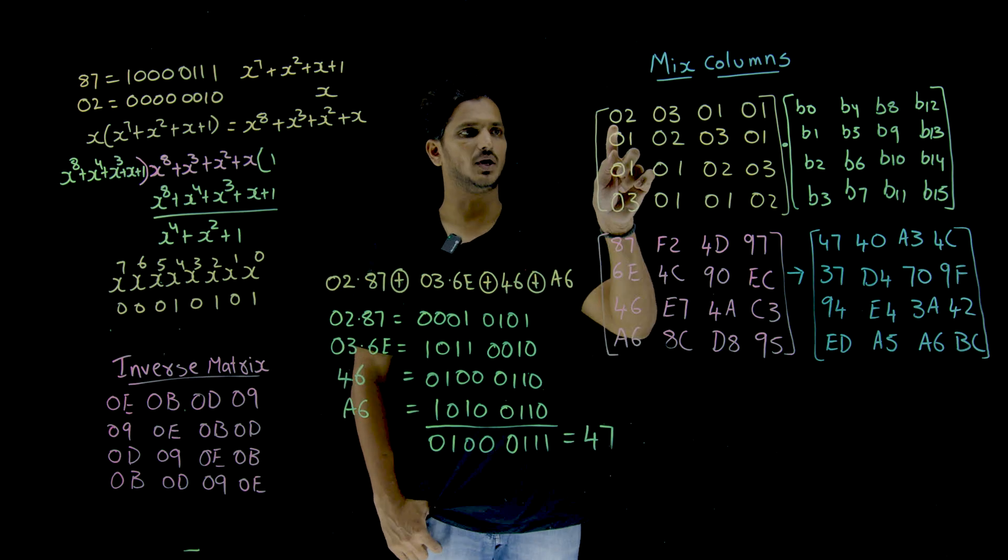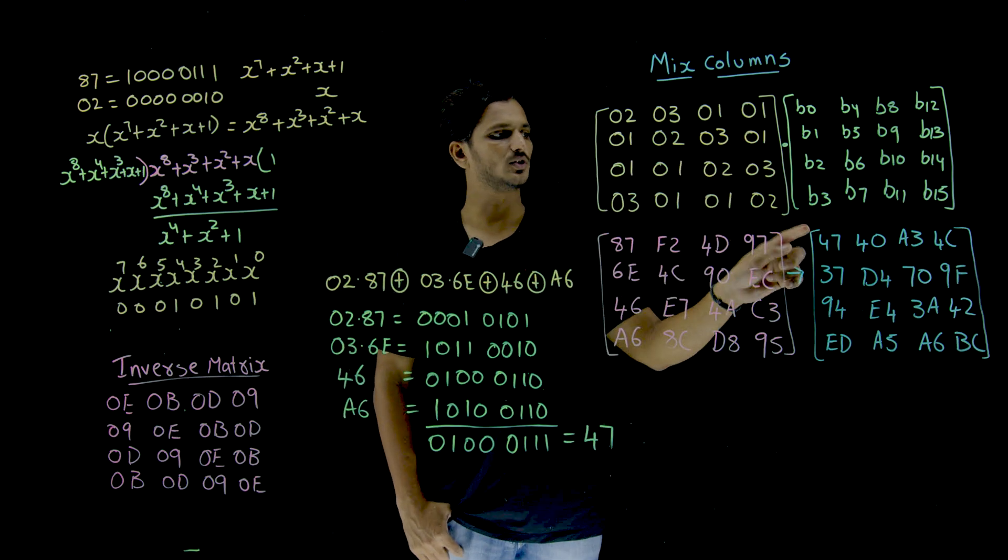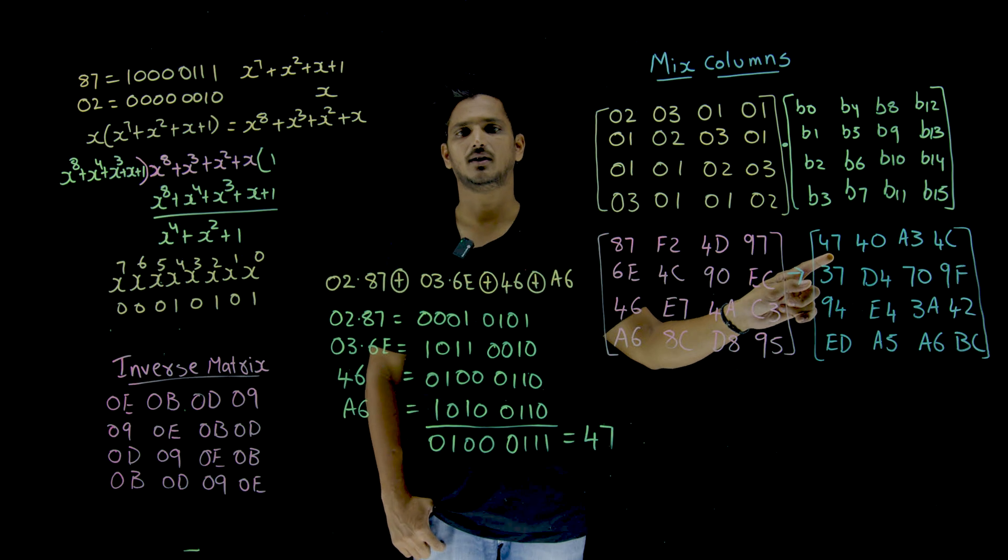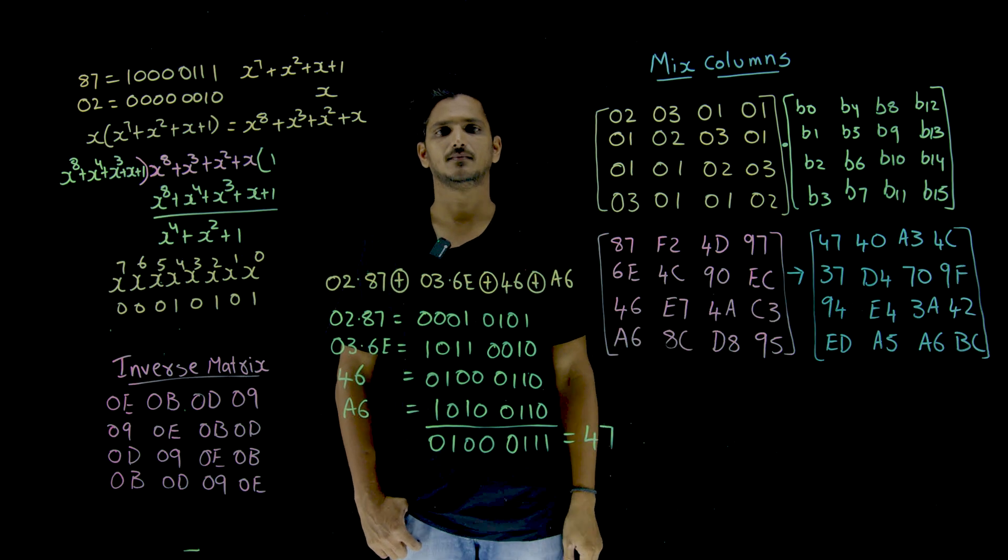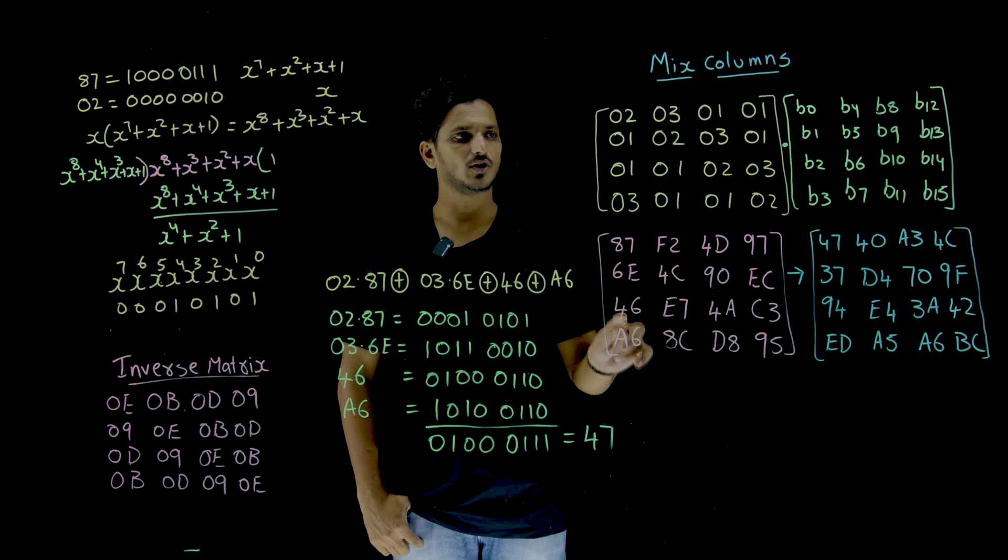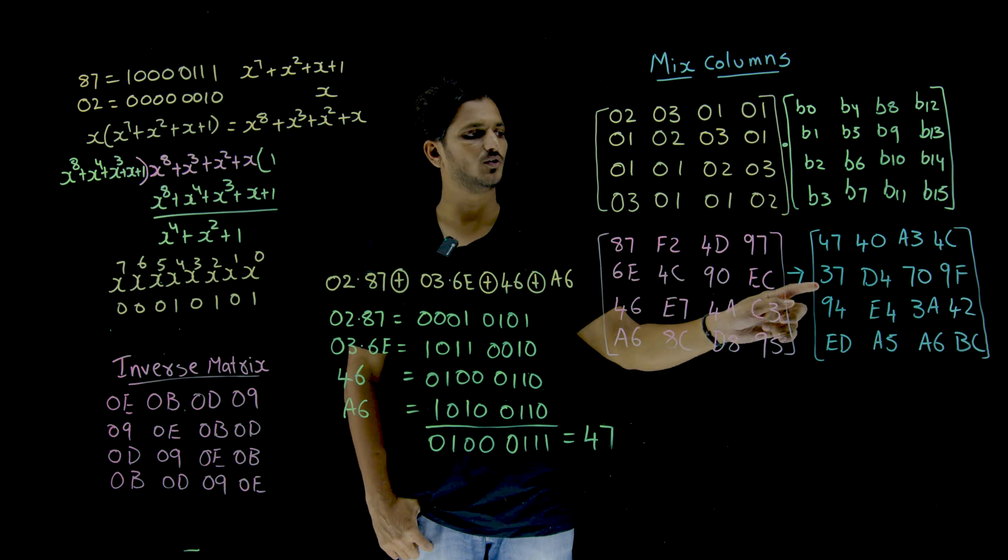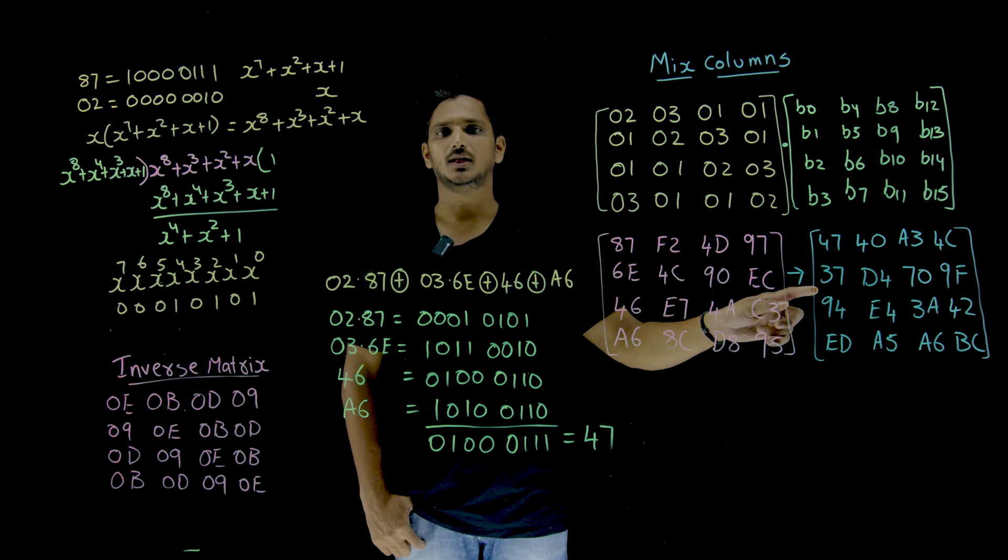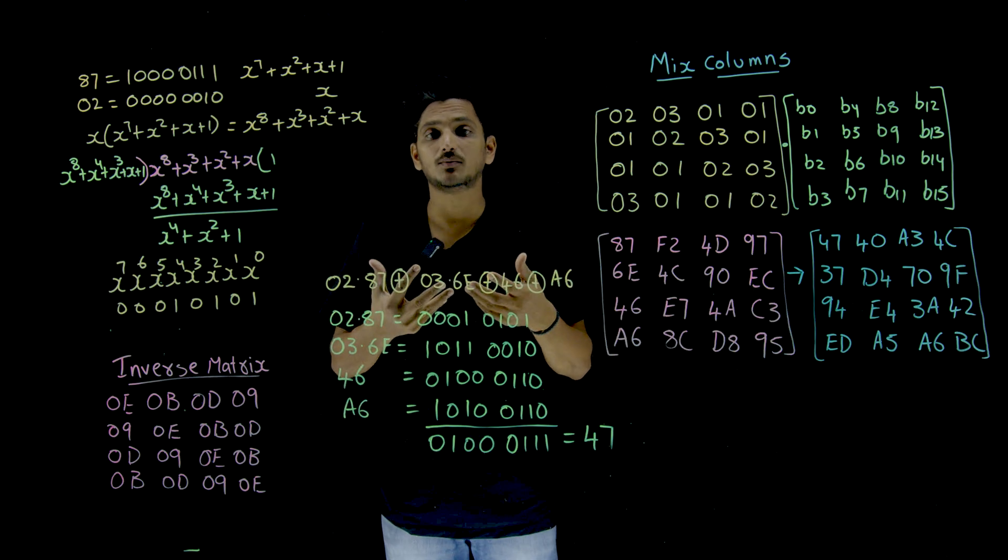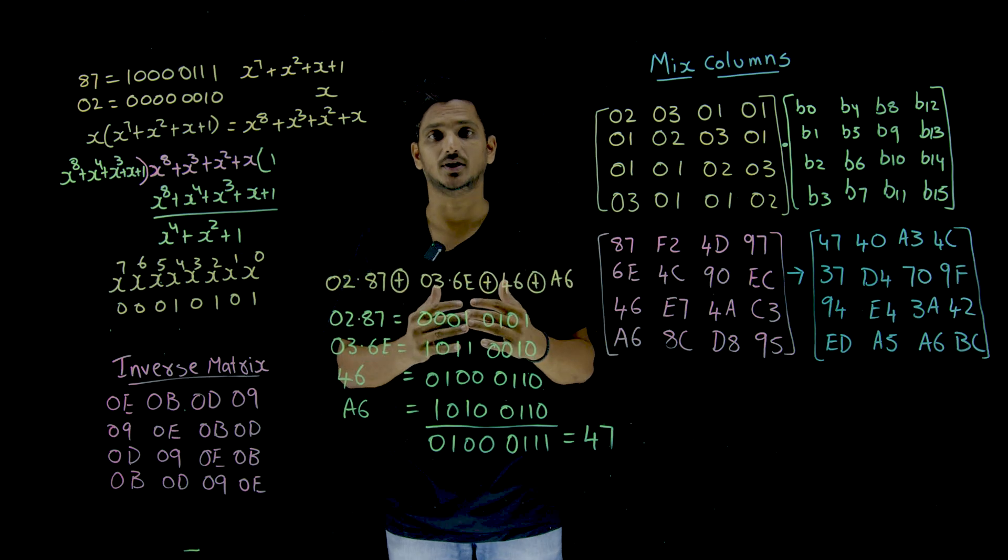So, first column multiplied by first row, you are going to get 47. Similarly, first column multiplied by second row, you are going to get 37. This is what we are going to do in mixed columns during the encryption stage.